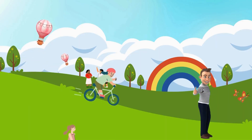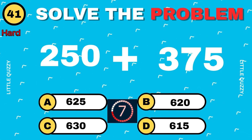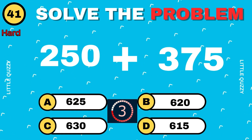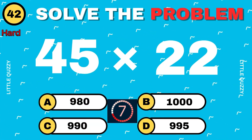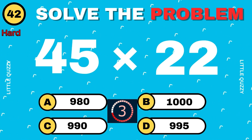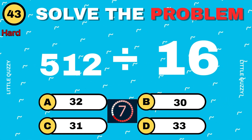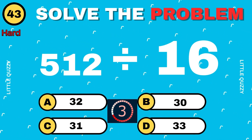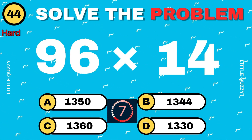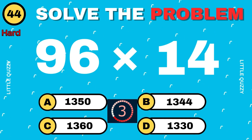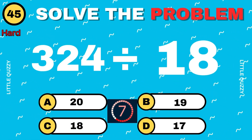Level up break — only 10 more to go! Can you power through? Let's do it, champs. What is 250 plus 375? The answer is 625. What is 45 times 22? Correct answer: 990. What is 512 divided by 16? The answer is 32. What is 96 times 14? The answer is 1344.